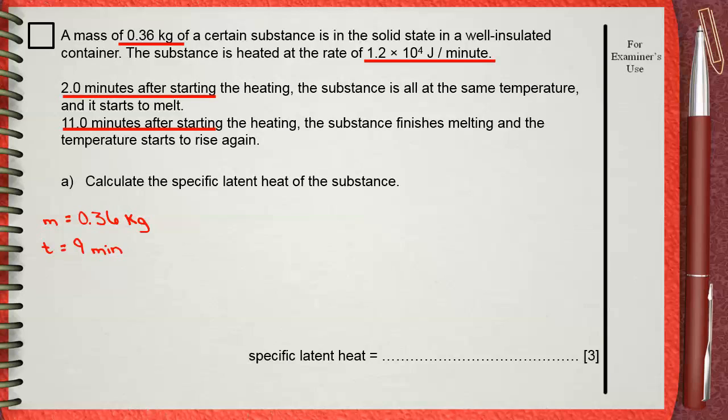This means that the total quantity of heat taken during these 9 minutes of melting is 1.2 × 10^4 times 9 minutes. This will give 1.08 × 10^5 joules. This is the total Q in the 9 minutes.